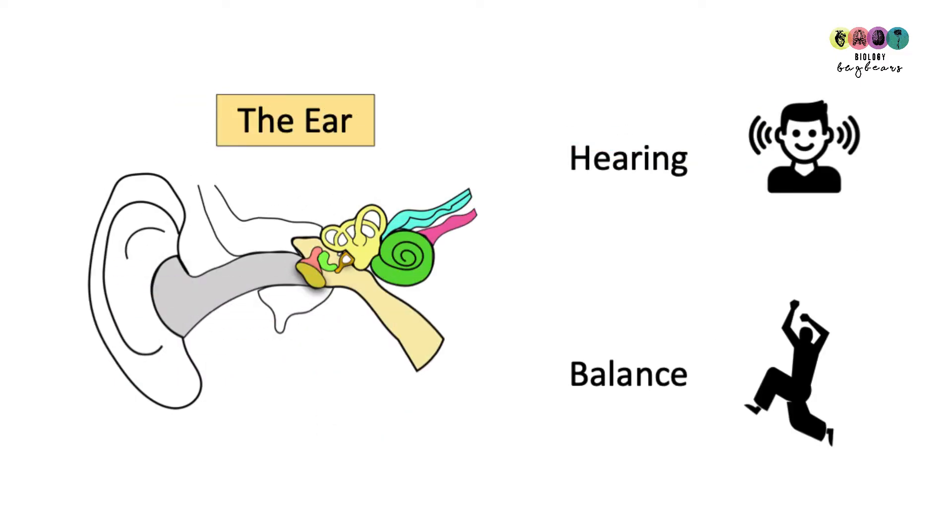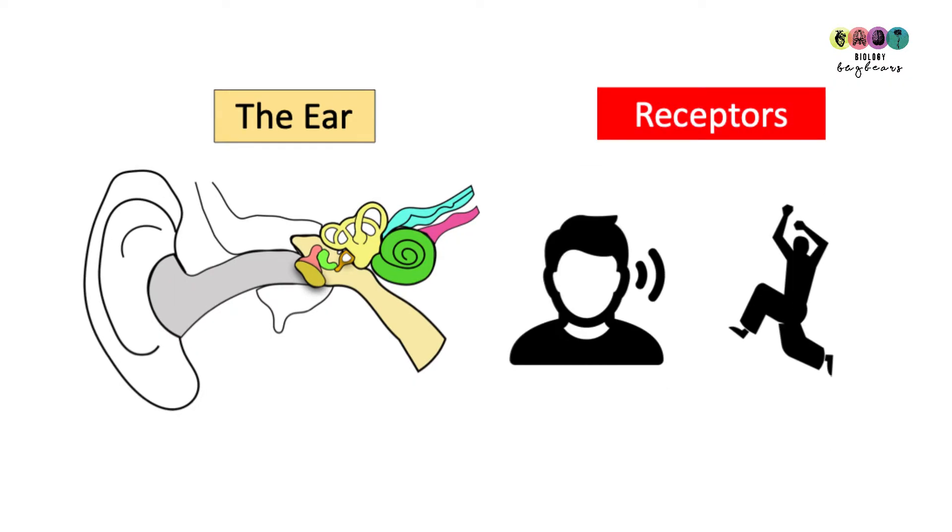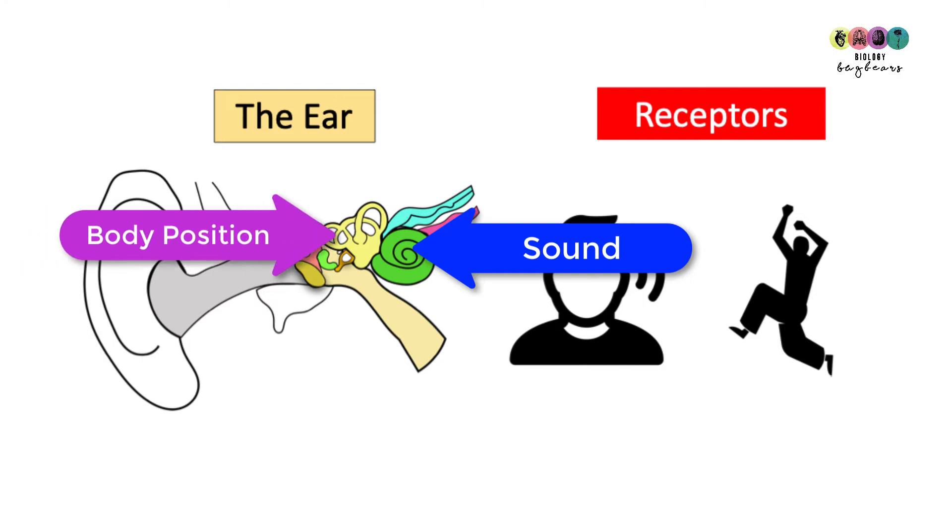The next sense organ is the ear. It detects sound which gives us hearing and it also detects body position which gives us the ability to balance. The reason why the ear can do this is because it has specialised receptors - one set that deals with sound and the other that deals with detecting body position.